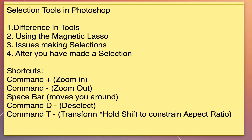I have a list of keyboard shortcuts we're going to use today. Command plus zooms you in, Command minus zooms you out. When you're zoomed in you can use the space bar to move around — click the space bar and drag around in your image. Command D is deselect and Command T is transform. Remember if you hold Shift down you'll constrain the aspect ratio, and I'll show you that later.